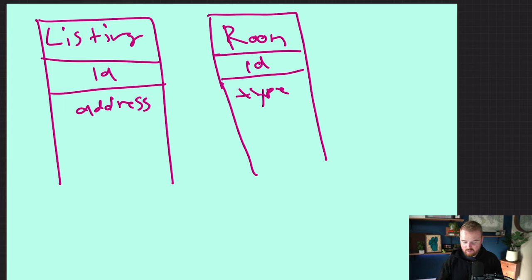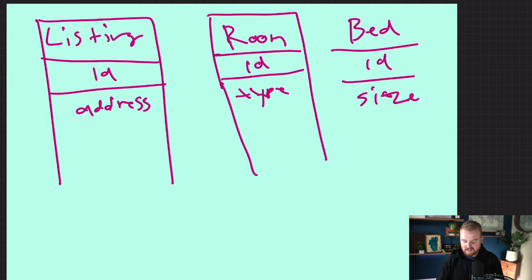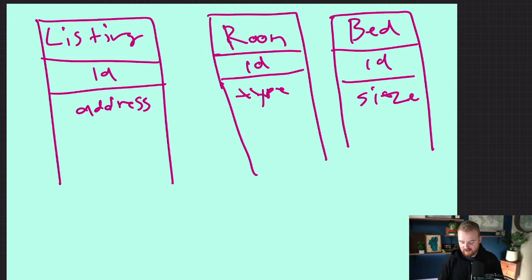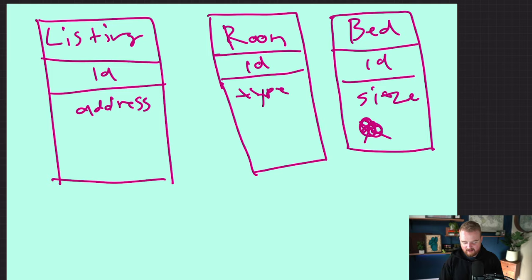The room_type will be something like bedroom versus primary bedroom versus living room versus guest room. Then also in each room we're going to have beds, and each bed can similarly have a type — in this case we'll call it the size: is it a twin bed, a king bed, whatever. A single listing will have many rooms, and one room will have many beds.